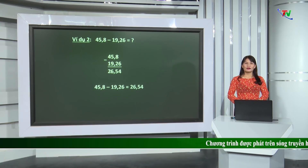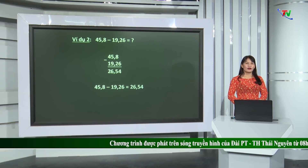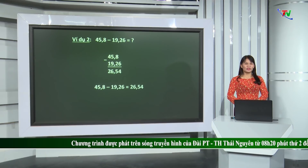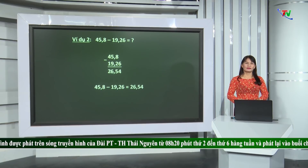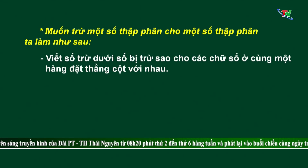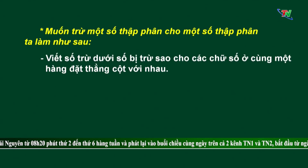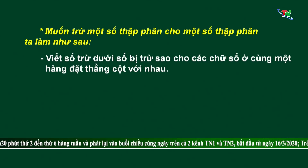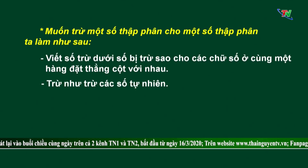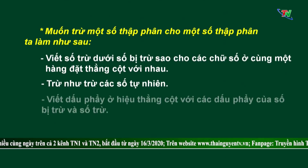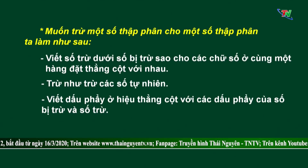Qua 2 phép tính trên, cô đã giúp chúng mình củng cố lại kỹ năng về phép trừ 2 số thập phân. Muốn trừ một số thập phân cho một số thập phân, ta làm như sau: viết số trừ dưới số bị trừ, sao cho các chữ số ở cùng một hàng đặt thẳng cột với nhau; trừ như trừ các số tự nhiên; viết dấu phẩy ở hiệu thẳng cột với các dấu phẩy của số bị trừ và số trừ.